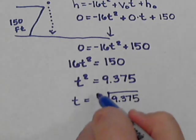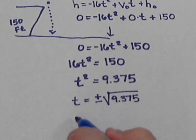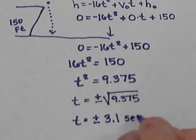And technically, when you take the square root of both sides, you've got to include a plus or minus sign. So we get, if we take the square root of this, about 3.1 seconds. So our T is about plus or minus 3.1 seconds.